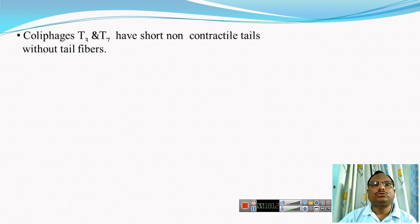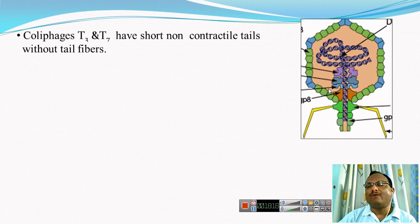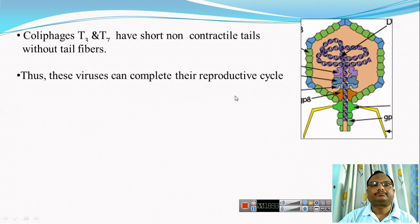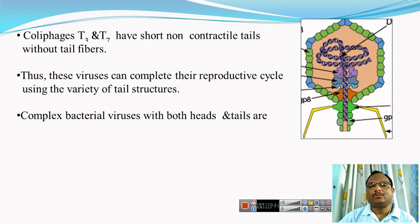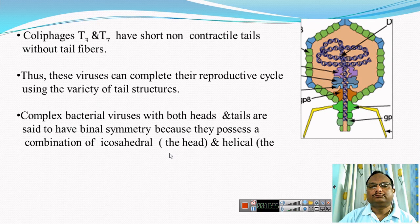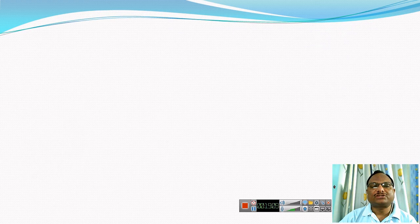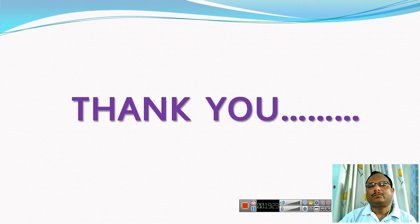Coli phages like T3 and T7 have a short and non-contractile tail and also lack tail fibers. The T7 coli phage has an icosahedral head containing genetic material, but the tail is very short, non-contractile, and without tail fibers. Such viruses complete their reproductive cycle using a variety of tail structures. The complex bacterial viruses with both head and tail are said to have binal symmetry, as they possess a combination of an icosahedral head and helical tail, making their structure complex.